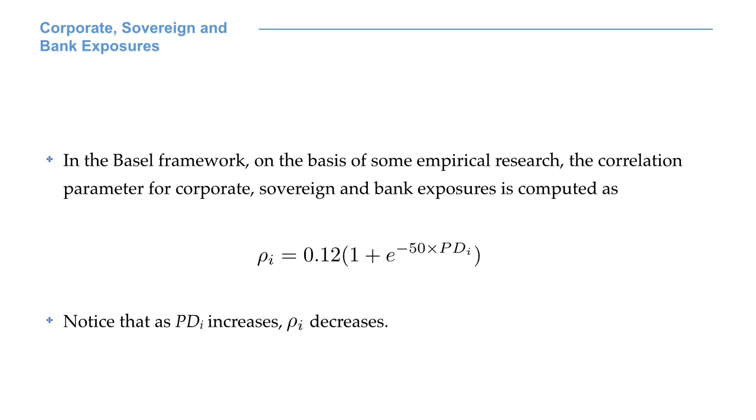If the PD increases, correlation decreases. Why? The idea is that if a company becomes less credit-worthy, its PD increases, and its probability of default becomes more idiosyncratic, company-specific, and less affected by the overall market conditions.